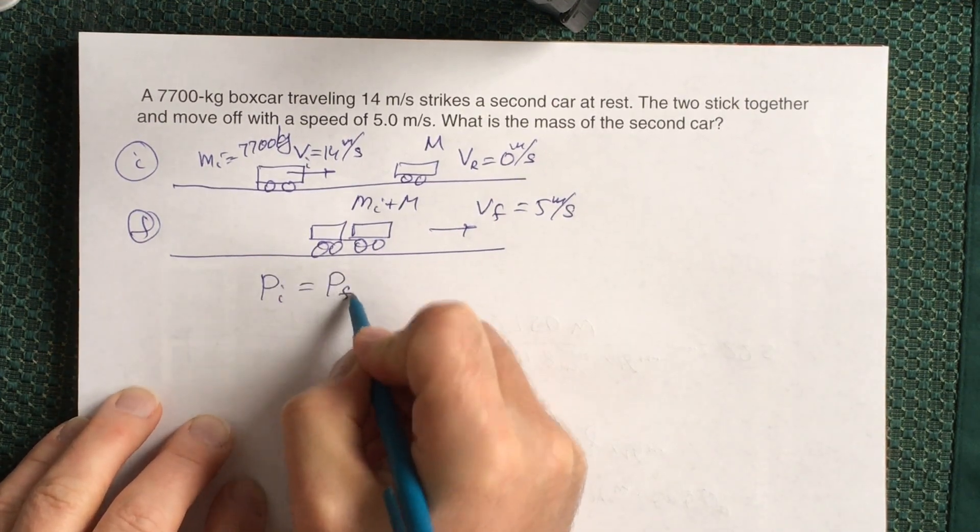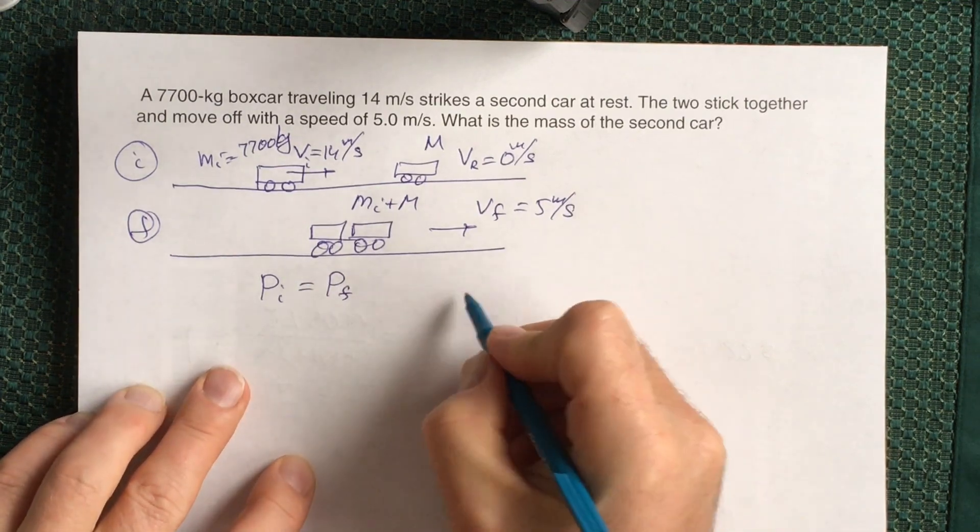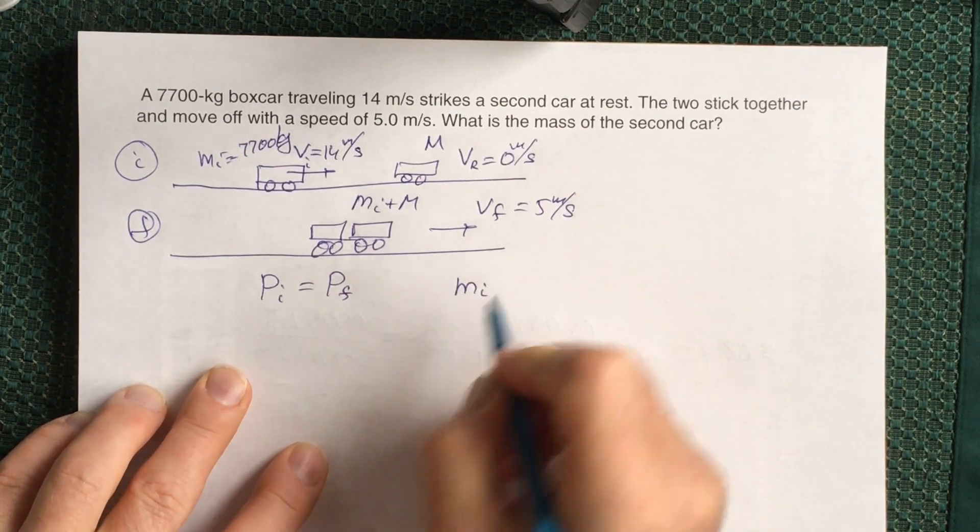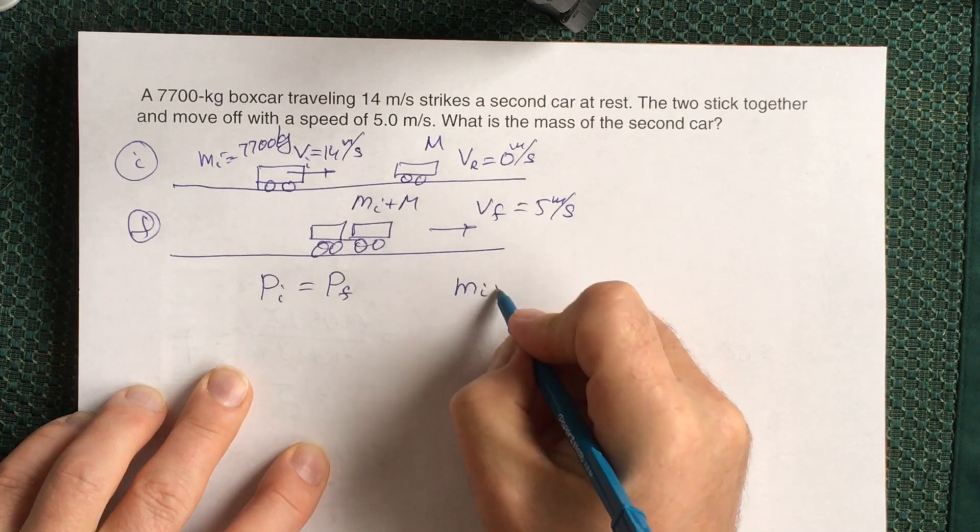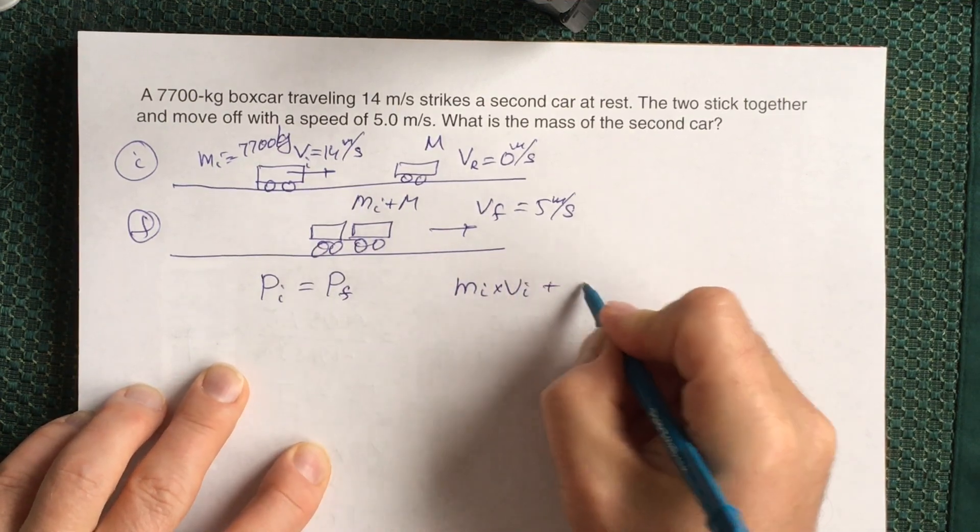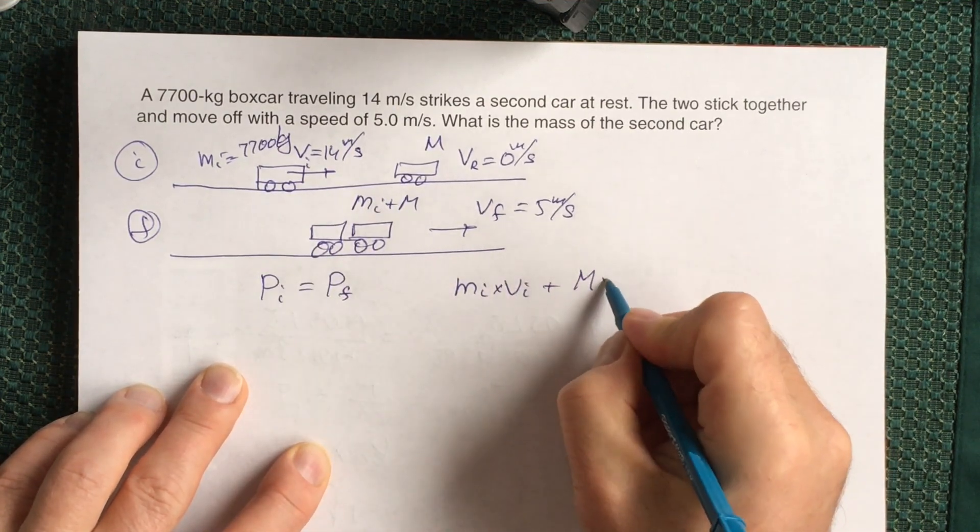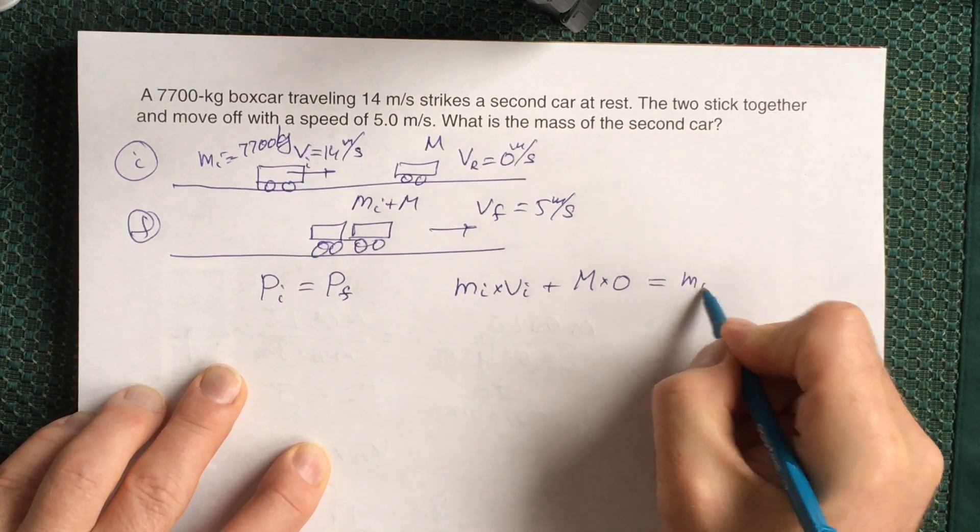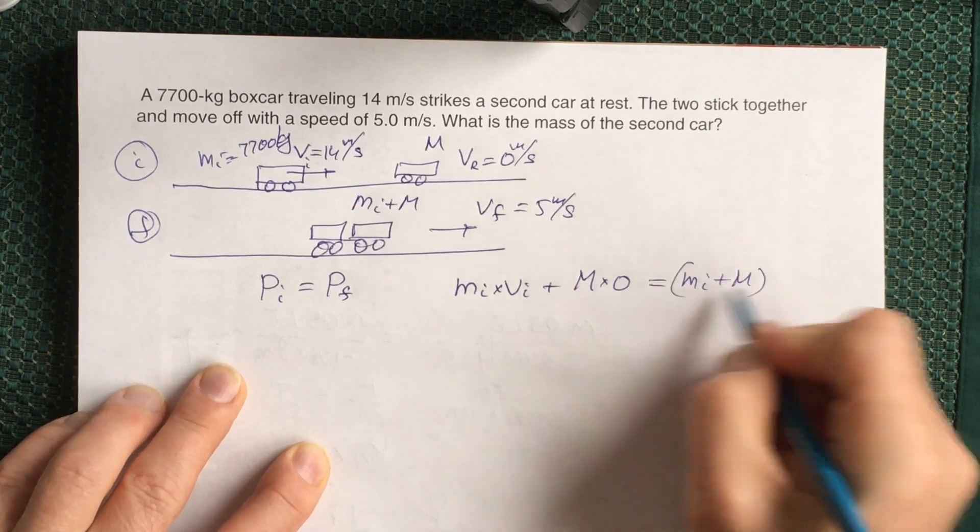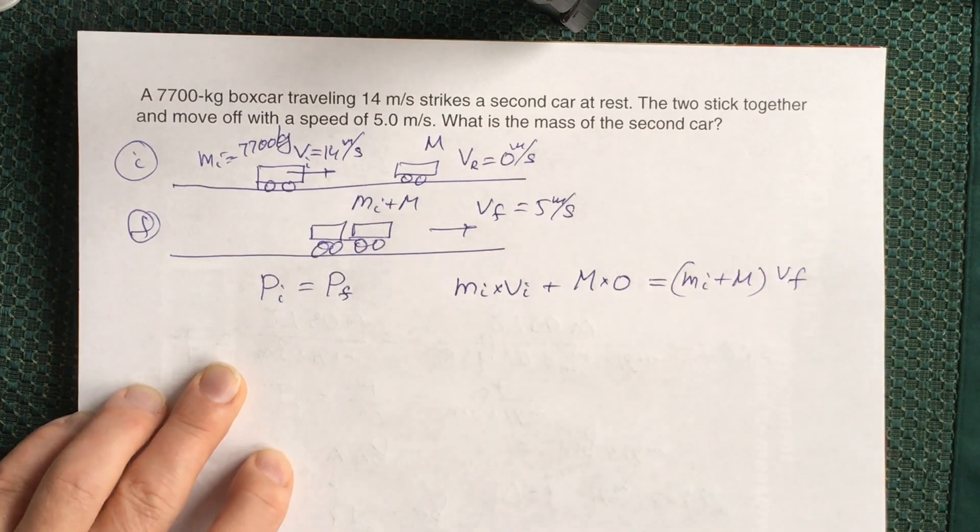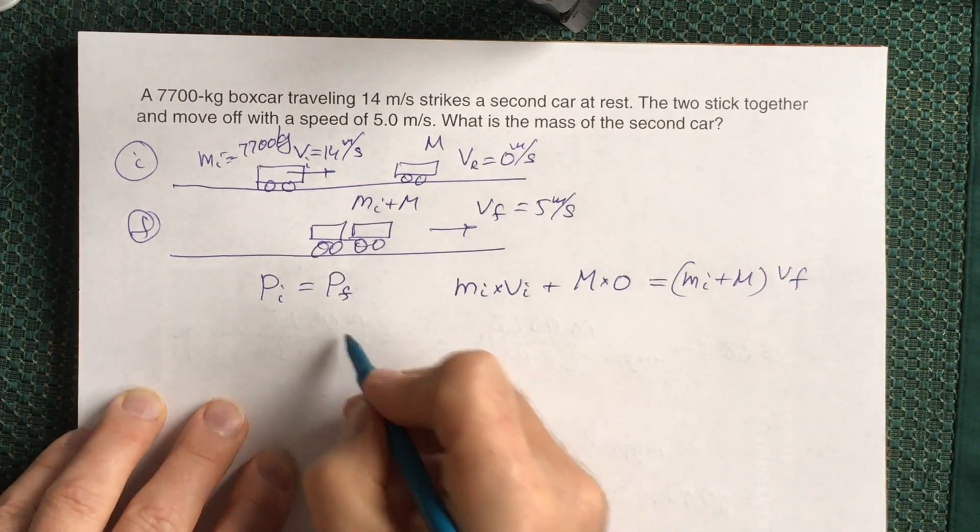The initial momentum—mass of the boxcar times initial velocity of the boxcar, plus mass of the car at rest times 0—has to equal the sum of the masses times final velocity. So we have m₁v₁ + M·0 = (m₁ + M)vf.